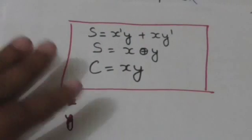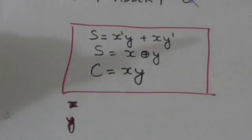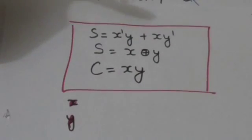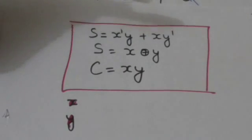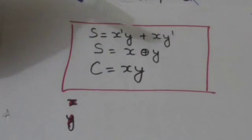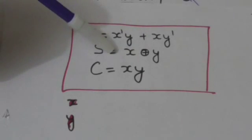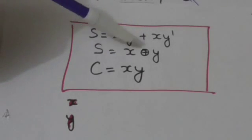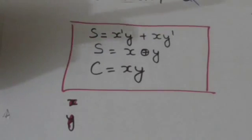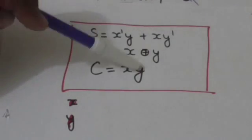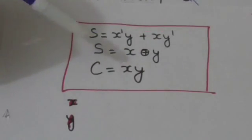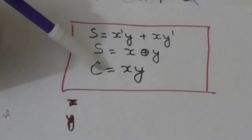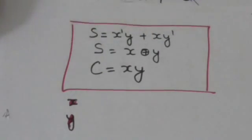We know that X̄Y plus XȲ is an XOR function, so S equals X XOR Y. This is the operator symbol for the XOR function. And C equals X AND Y.